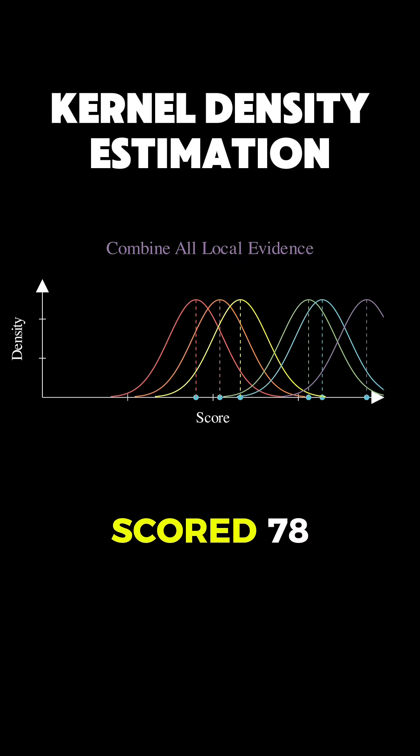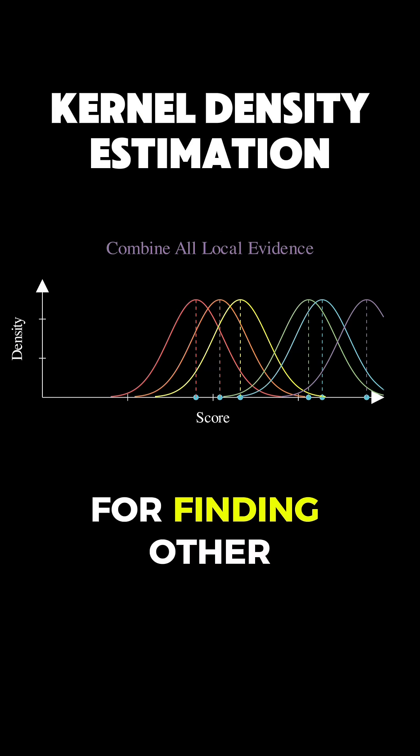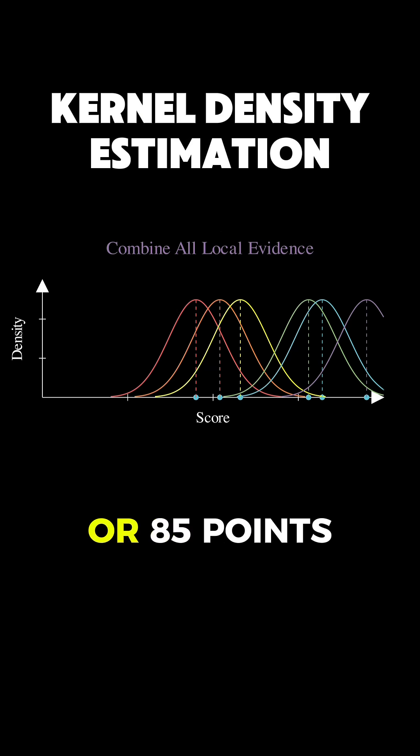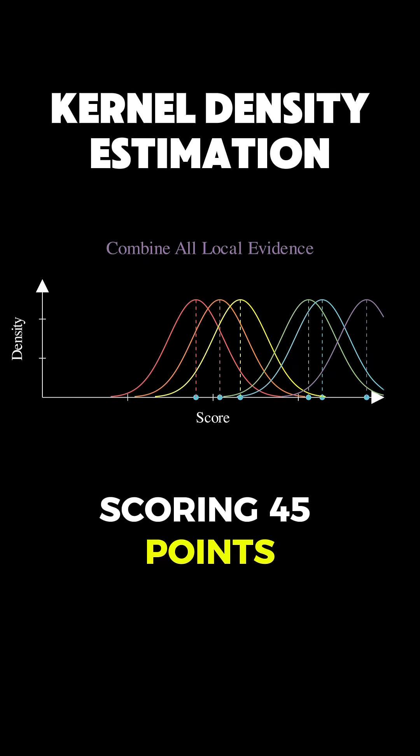The student who scored 78 provides strong evidence for finding other students around 78 points, moderate evidence for students scoring around 70 or 85 points, and very little evidence for students scoring 45 points.